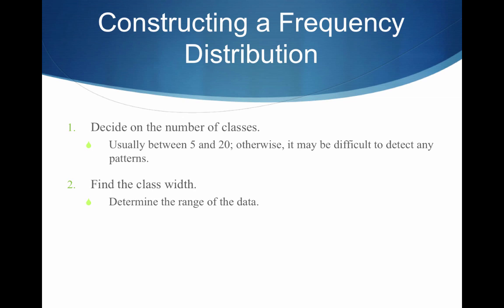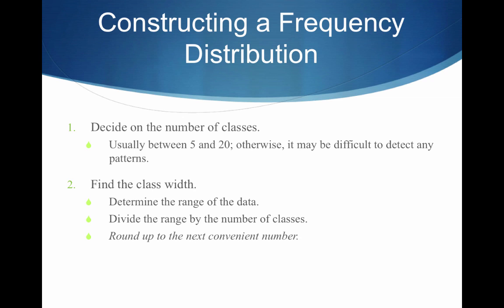Then we want to find the class width. We determine the range of the data — maximum minus minimum — and divide the range by the number of classes from step 1. If you get a decimal, you round up to the next whole number. I'll say it one more time so you don't forget: if you get a decimal when calculating the class width, always round up.